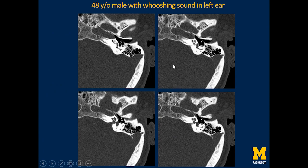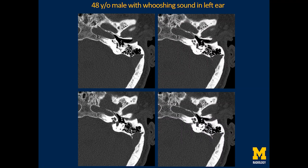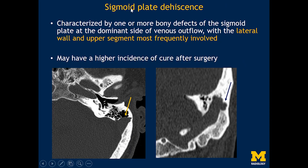Here is a different patient with a whooshing sound in the left ear. The jugular bulb was not high-riding and there was no dehiscence — so is this a normal scan? Before you close that study, pay particular attention to the sigmoid sinus where it changes orientation from horizontal to vertical. It should always be covered by bone, and that covering is missing here along the anterior aspect. Blood flowing through this structure will show pulsations transmitted into the mastoid and then the middle ear cavity — this is called sigmoid plate dehiscence, a commonly under-recognized cause of pulsatile tinnitus. It is important to recognize because it has a higher incidence of cure after surgery.